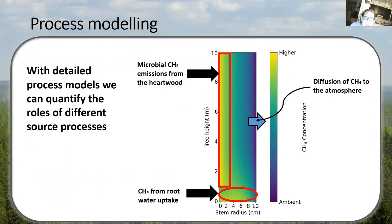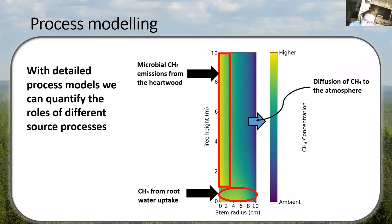To put these things together, we are developing models of these processes to quantify the role that each different methane source plays in emissions from trees. In one simulation, for example, we are trying to understand two different source processes and how they affect methane emissions from tree stems. We simulate roots taking up methane with the water the tree absorbs, and we also simulate methane being produced by microorganisms in the core wood of the tree. This gives us a model that predicts different amounts of methane coming out of the stem at different heights.